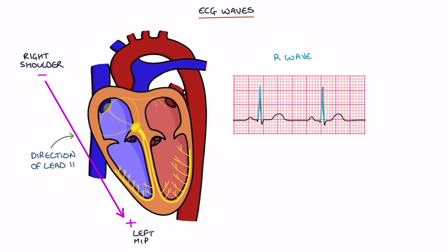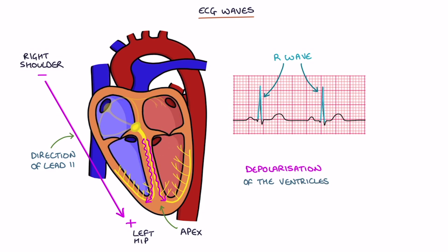The R wave represents the electrical impulse traveling down to the apex — the tip of the heart — and the main depolarization of the ventricles. This is in the same direction as lead 2, from the right shoulder to the left hip, so it appears as a positive upstroke. The R wave is typically the largest part of the QRS complex.